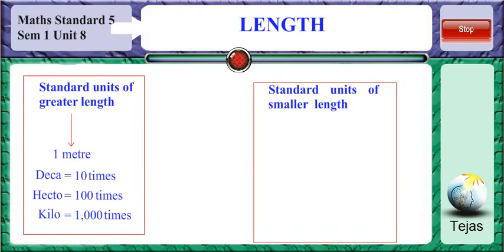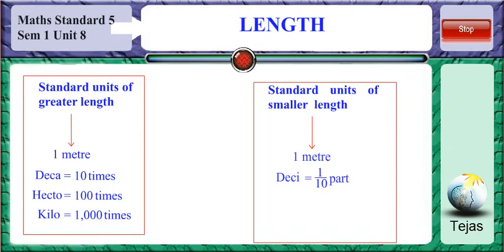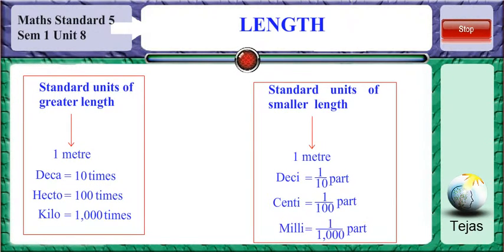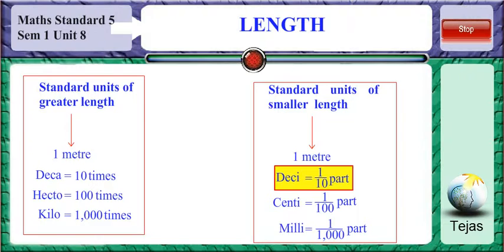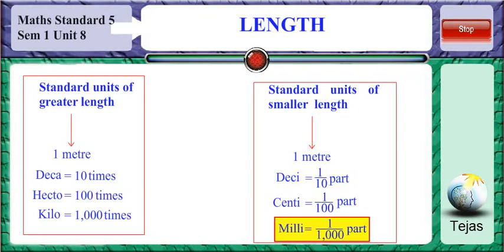The standard units for smaller length are: decimeter — deci is one tenth of a meter; centimeter — centi is one hundredth of a meter; and millimeter — milli is one thousandth of a meter. The other way to interpret this is: 10 decimeters equals 1 meter, and 1000 millimeters equals 1 meter.